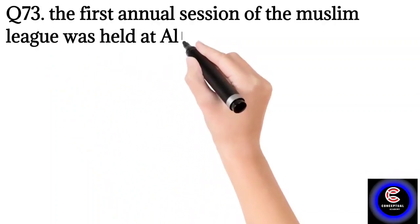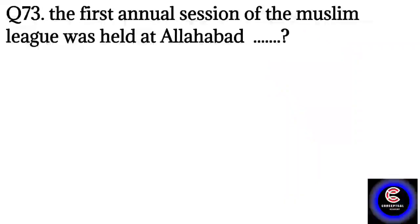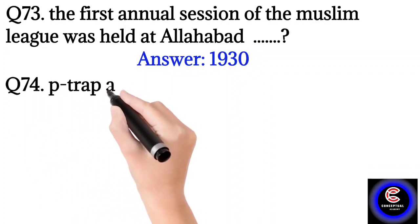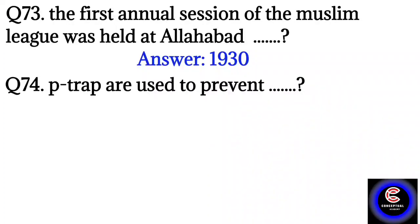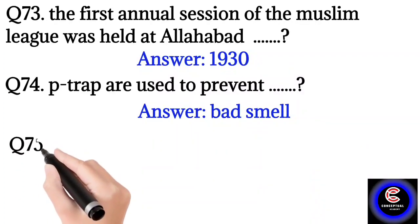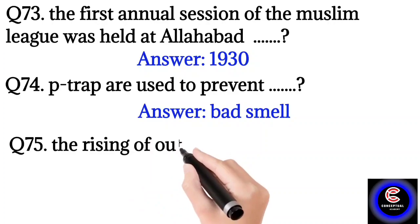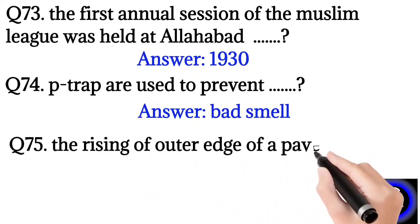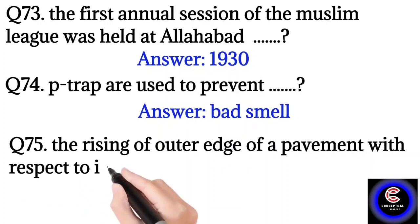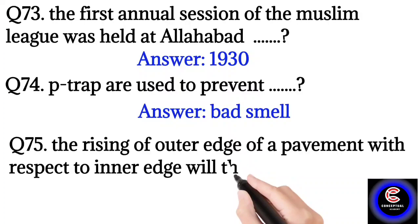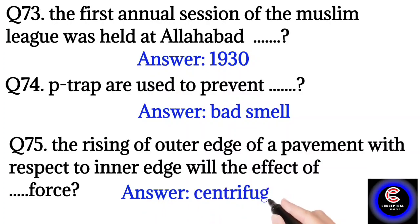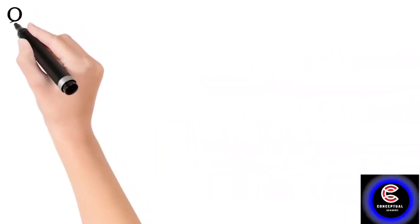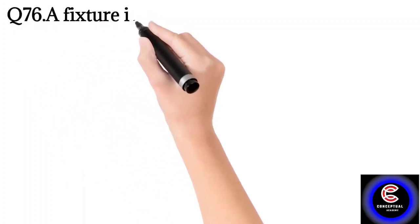Question number 74: Beat rape are used to prevent? So the answer is bad smell. Question number 75: The rising of outer edge of pavement with respect to inner edge will be effect of centrifugal force? So the answer is centrifugal force. Question number 76: A fixture is used to check the foul gases? So the answer is trap.